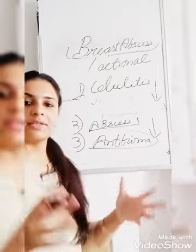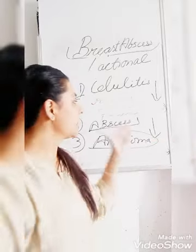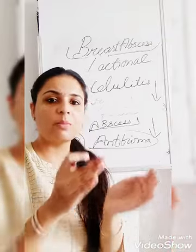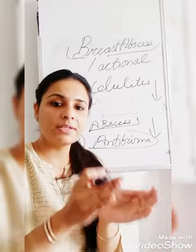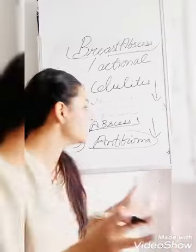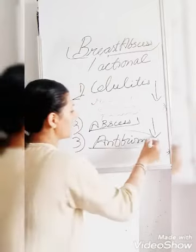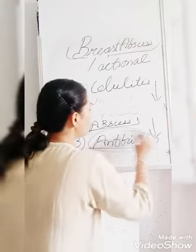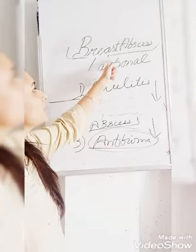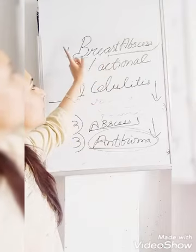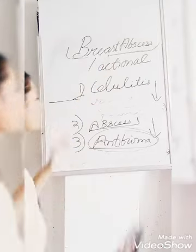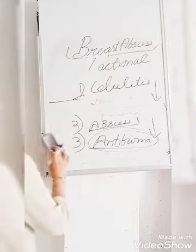After giving antibiotics, the abscess can turn into an antibioma — a complication of breast abscess. Antibioma is localized sterile pus; earlier the pus was spreading, but now it has become localized and encased in a thick fibrous tissue covering. These are the three stages.